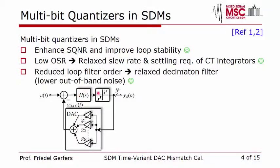On top of that, since we have a multi-bit quantizer we can also reduce the loop filter order, which reduces the number of components, decreasing silicon area requirements and reducing power consumption. This holds not only for the analog part but also for the digital decimation filter, as they go hand in hand.